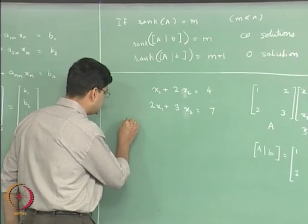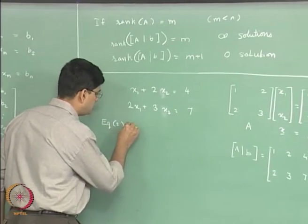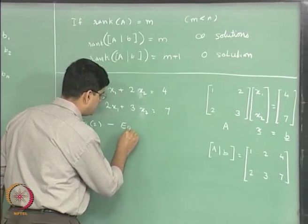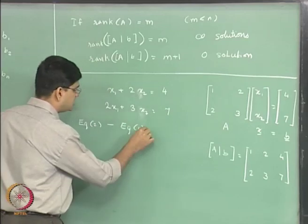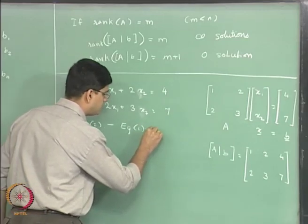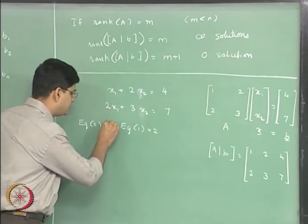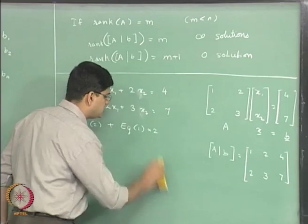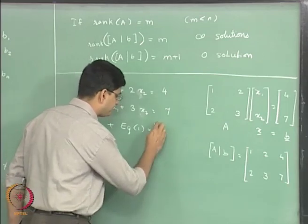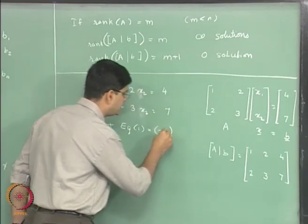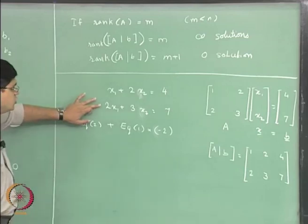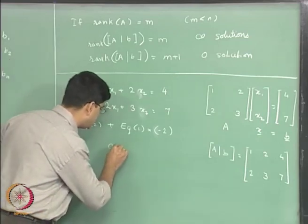So we will write this as equation 2 minus equation 1 multiplied by 2. So this is what we are going to do, but instead I will write it in this form: equation 2 plus equation 1 multiplied by minus 2.